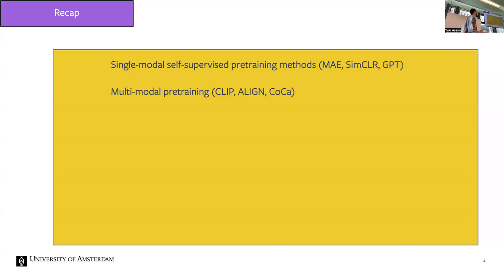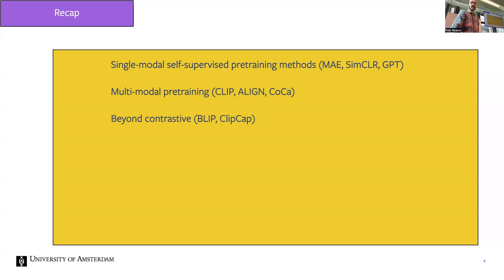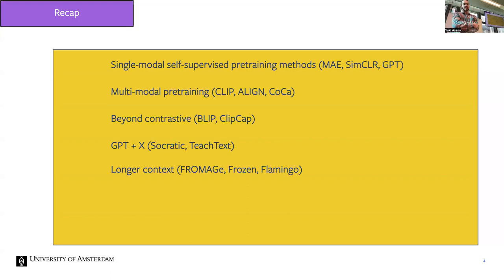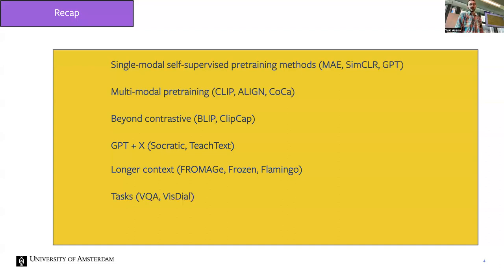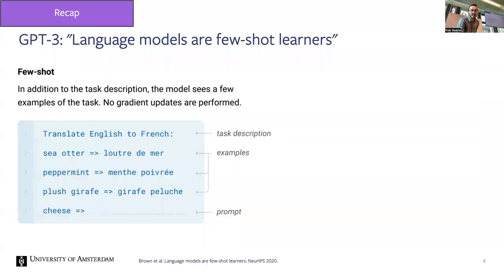We then moved into multimodal learning with models that align two modalities using two encoders — something like CLIP or ALIGN — and architectures like CoCa which combine captioning and contrastive learning. We also discussed further methods applying captioning with a retrieval token, and explored using GPT as an oracle via Socratic Models, TeachText, and a paper that asked GPT how to visually identify specific birds.